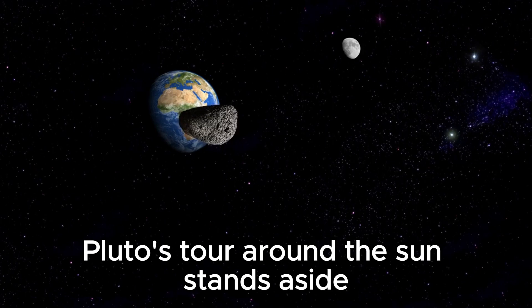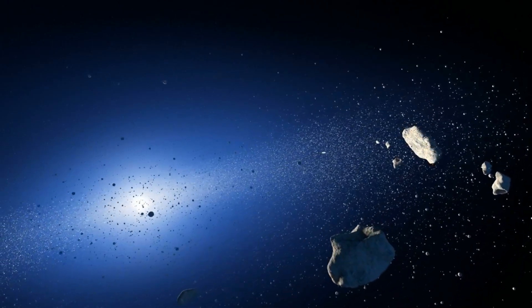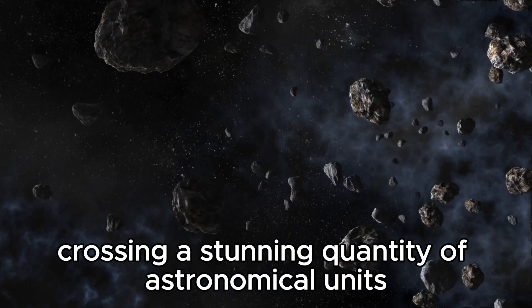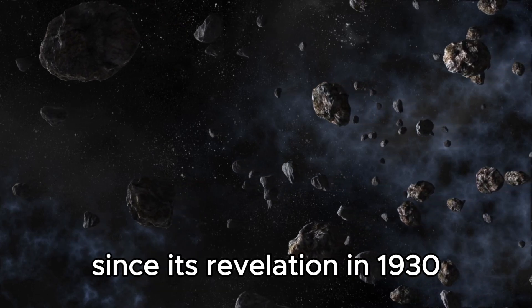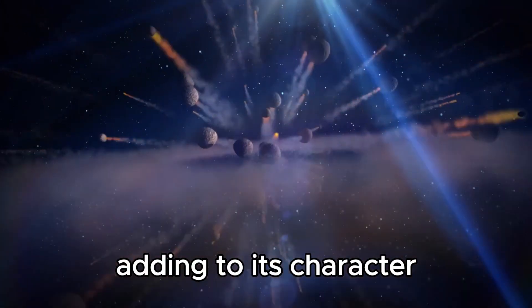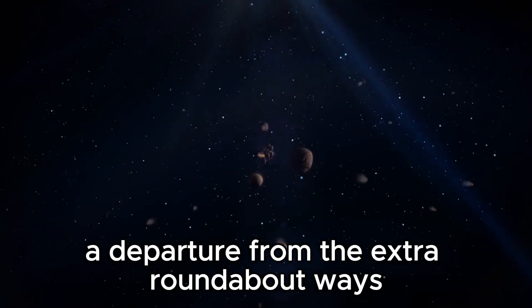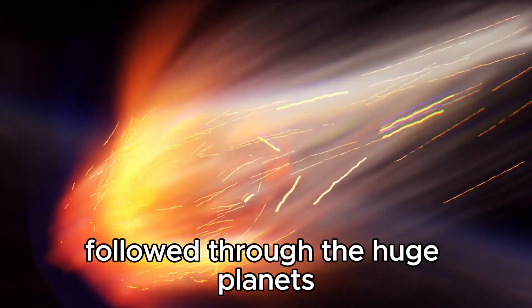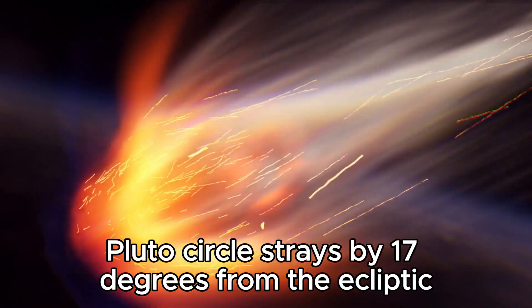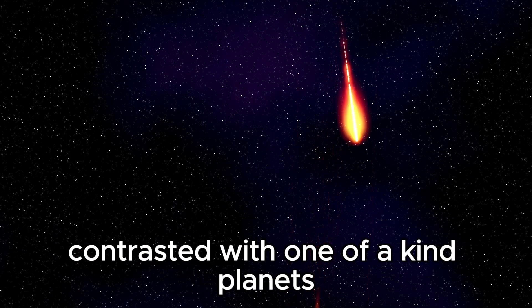Pluto's tour around the Sun stands aside due to its top-notch attributes within our close-by-planet group. Its circle is particularly widespread, crossing a stunning quantity of astronomical units. Since its revelation in 1930, Pluto has yet to complete a full unrest around the solar. Adding to its character is the profoundly stretched kingdom of its circle, a departure from the extra roundabout ways followed through the huge planets. Moreover, Pluto's circle strays by 17 degrees from the ecliptic aircraft, giving its way a greater intense grade contrasted with one-of-a-kind planets.